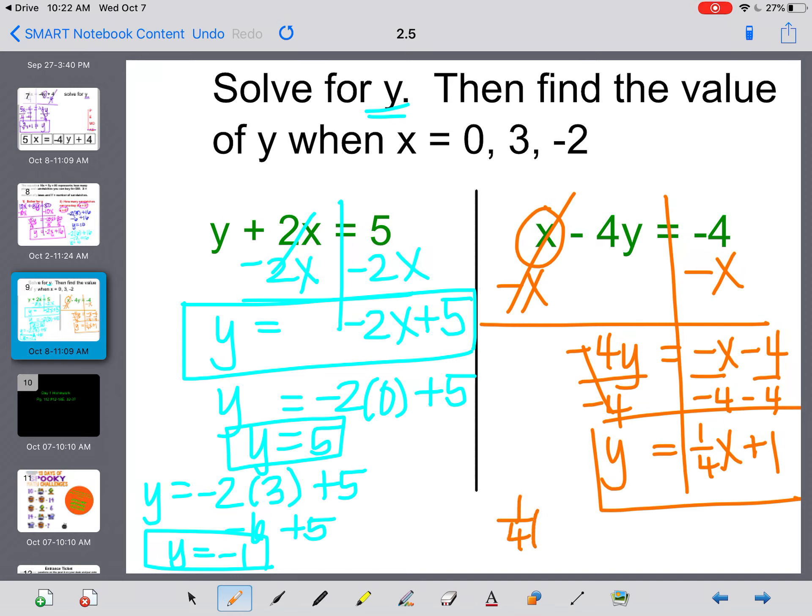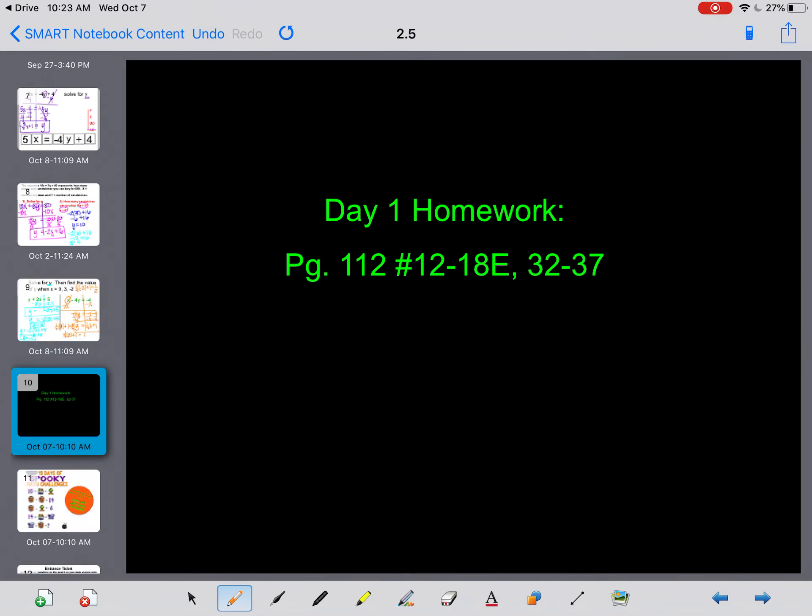If I plug in a 0, 1 fourth times 0 plus 1, that's going to just give me a 1. If I plug in a 3, I'm running out of space here, 1 fourth times 3 plus 1, well, 1 fourth times 3 is 3 fourths, plus 1 will just be 1 and 3 fourths. And then if I plug in a negative 2, I'm going to move up to the top here, 1 fourth times negative 2 plus 1. 1 fourth times negative 2 gives us negative 2 fourths, or negative half, plus 1 equals positive 1 half.